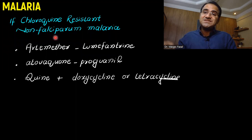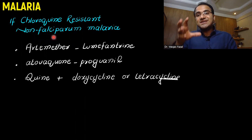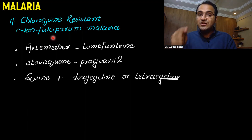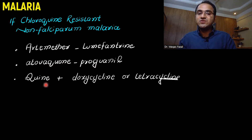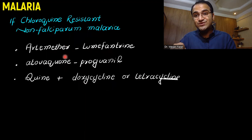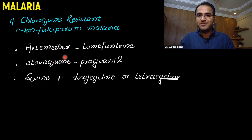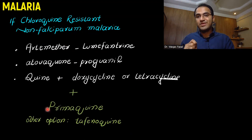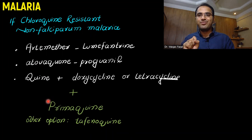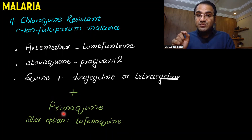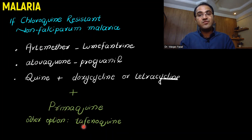If the non-falciparum malaria is resistant to chloroquine — as there are certain regions where chloroquine does not work even in non-falciparum malaria — you can use artemether-lumefantrine, atovaquone-proguanil, or quinine with doxycycline or tetracycline. You must still give primaquine to kill the liver hypnozoites with any of these regimens, since vivax and ovale hide in the liver. Tafenoquine can be used as an alternative to primaquine if primaquine is not available.